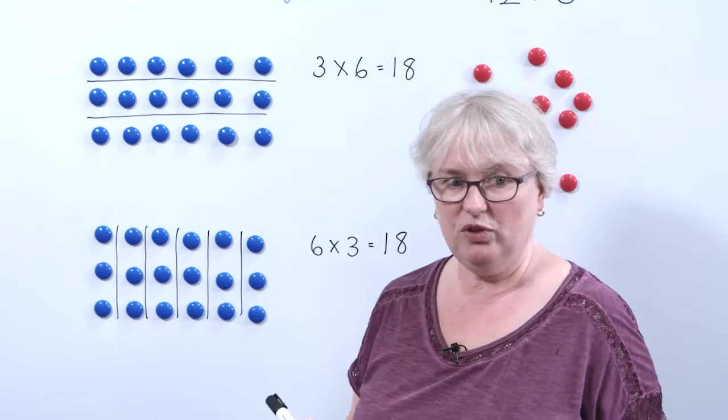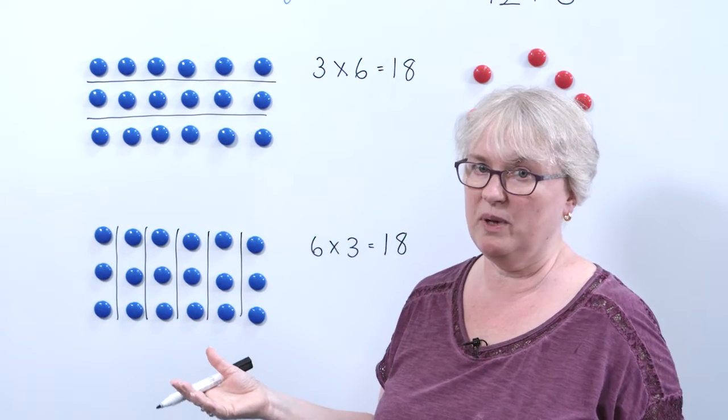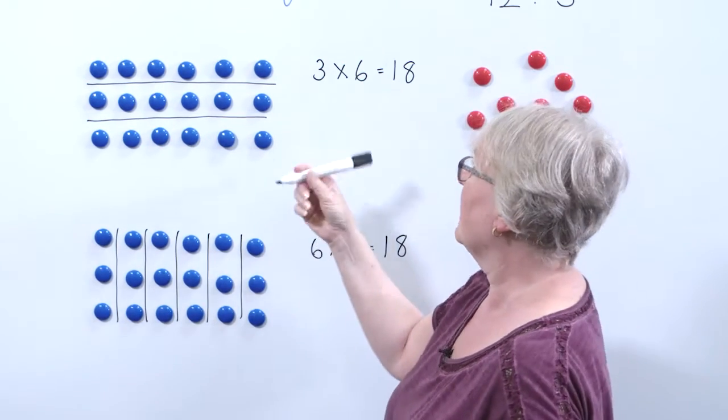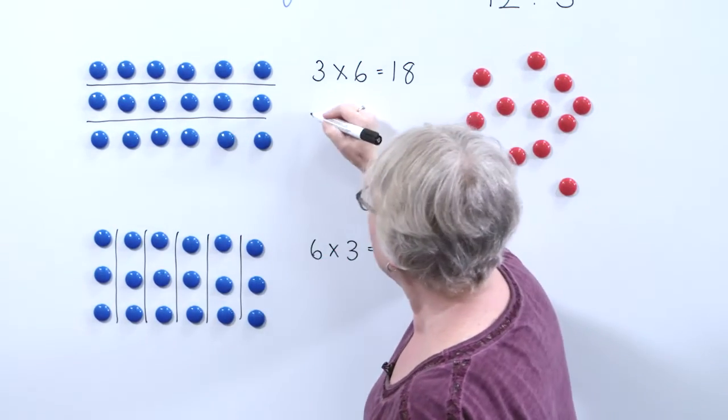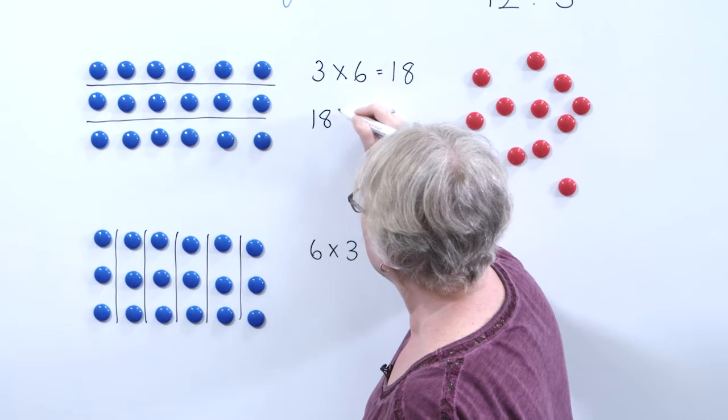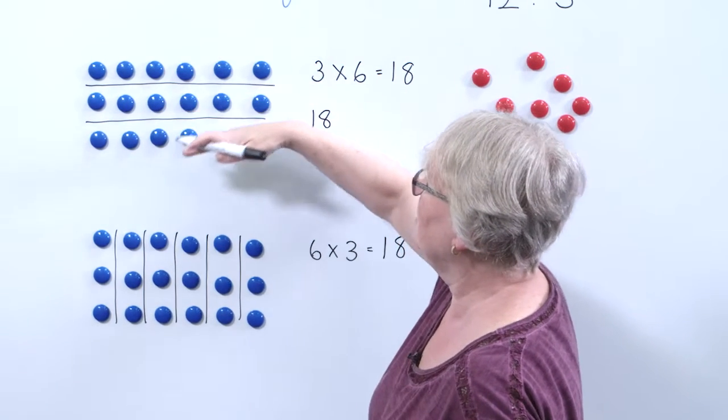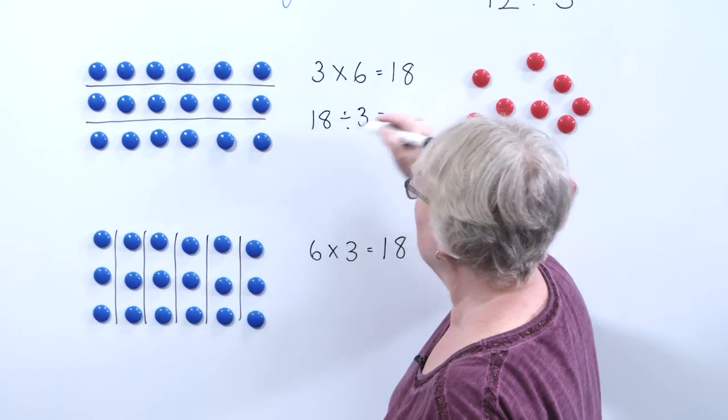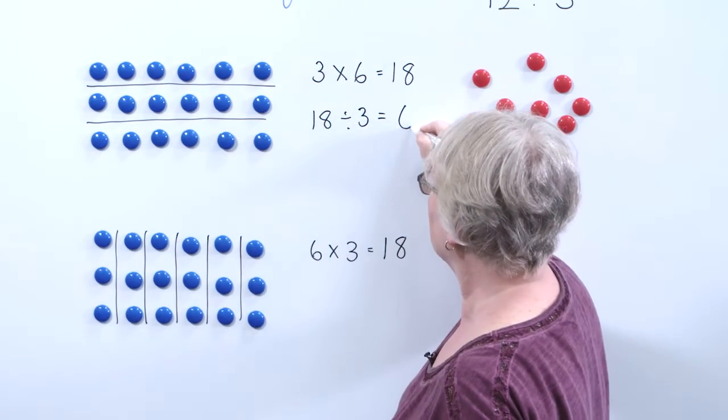It's important that you don't just use an array for multiplication but look at it again to see that it can help you with division. I can look at this array and see I've got 18 counters. They've been divided into three rows and in each row I've got six counters.